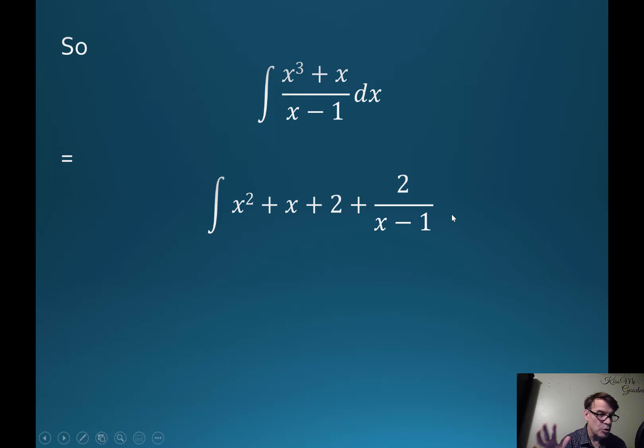Stewart just says this is what it is, and you might have thought, where did that come from? I've just shown you where that came from: x squared plus x plus 2 with a remainder of 2 over x minus 1. So we've done it, we've broken this down into partial fractions.